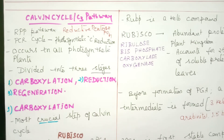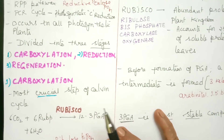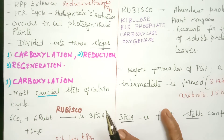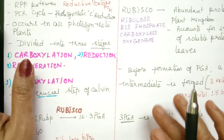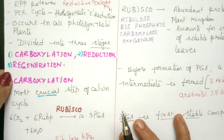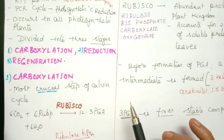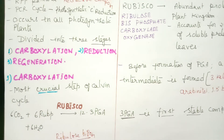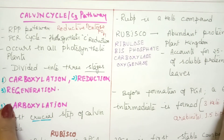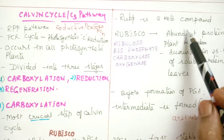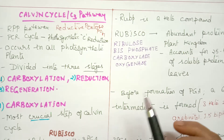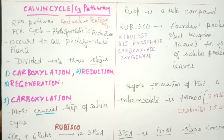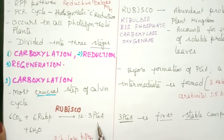The carboxylation phase is considered the most crucial step. Here there must be a primary acceptor of carbon dioxide. Carboxylation means addition of carbon dioxide. The primary acceptor is a 5-carbon compound called RuBP — ribulose bisphosphate — which is a keto compound. Carbon dioxide combines with RuBP to form the first product, PGA.